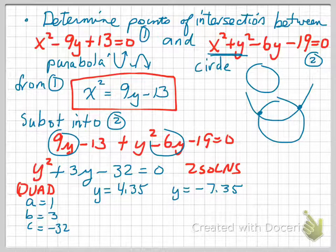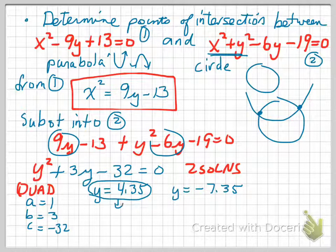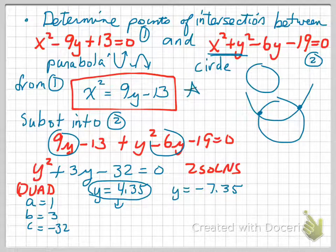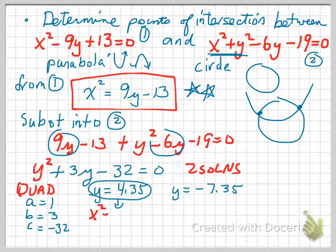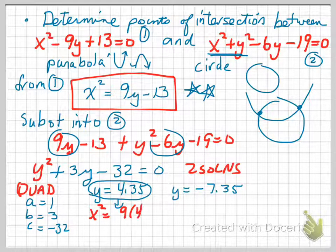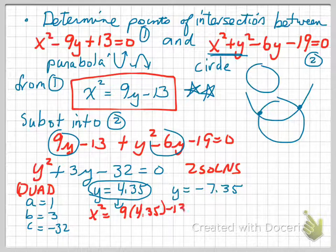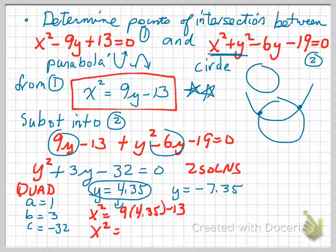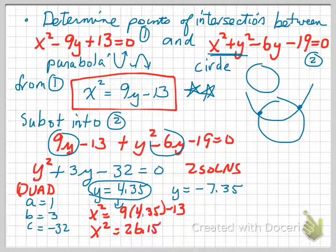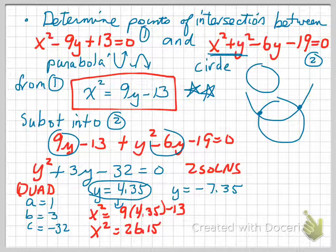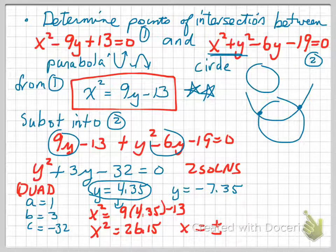And so now that I have two solutions for the y value, I can easily determine from that y value the corresponding x value. And how am I going to get the x value? I'm going to substitute back into the first equation, so from equation 1. So from equation 1 we have x squared is equal to 9 times y, 9 times 4.35, subtract 13, and so x squared is going to equal 26.15. And so that gives me two solutions when I take the square root. x is going to equal to plus or minus the square root of 26.15, which is plus or minus 5.11.